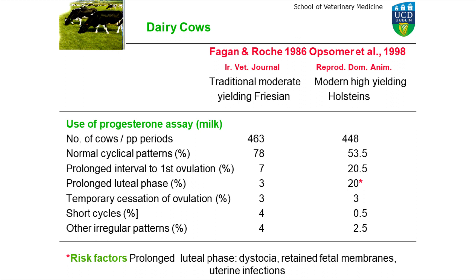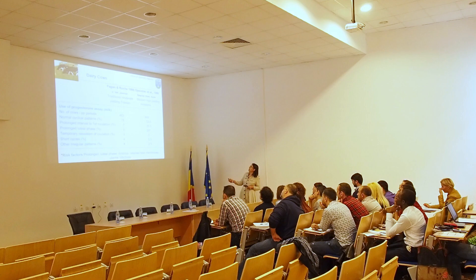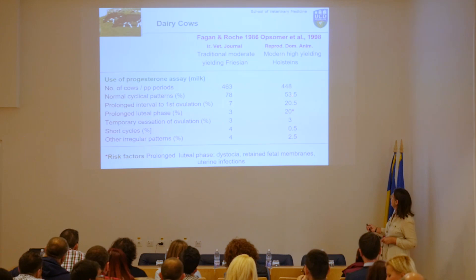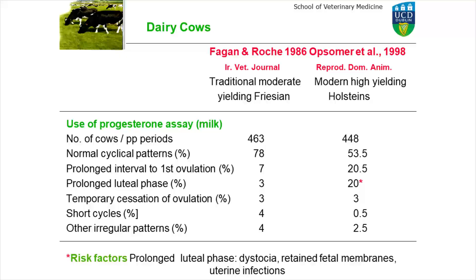Comparing abnormal progesterone profiles between cow types: traditional moderate Frisians in Ireland had nearly 80% showing normal oestrus cycles, whereas high-yielding Holsteins in a Belgian study had only about half showing normal cycles. Roughly 20% had prolonged intervals to first ovulation, 20% had prolonged luteal phases, and various other irregularities. Risk factors for prolonged luteal phases include dystocia, retained foetal membranes, and uterine infections.